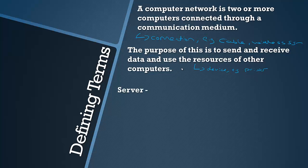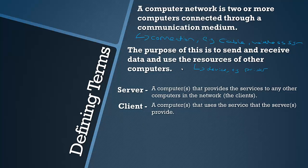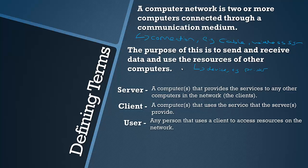A server is a computer or multiple computers that provide services to any other computers in the network, which are the clients. A client is a computer or many computers that uses the services the servers provide. Simply put: the server provides the services and the client uses them. A user is a person who uses a client to access resources on the network, such as printers and other peripheral devices.